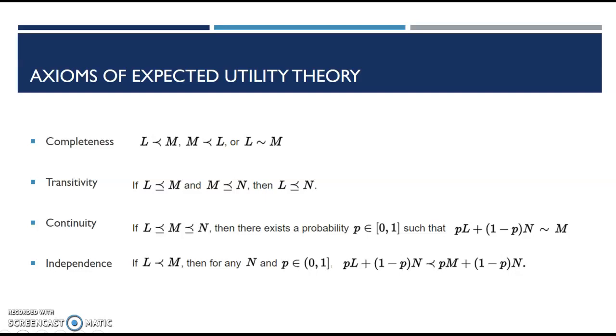Let's describe what utility function should look like. It must be complete, meaning if L is less preferred to M, or M is more preferred to L, there must be one of those, or L must be approximately equal to M—basically indifferent between them. It also must be transitive. So if M is more preferred to L, and N is more preferred to M, then N must be more preferred to L. This goes along with the continuity property: if we have transitivity, there must also be continuity where we can come up with some probabilities wherein I would be indifferent between the probability of L plus 1 minus the probability times N, making me indifferent to M.